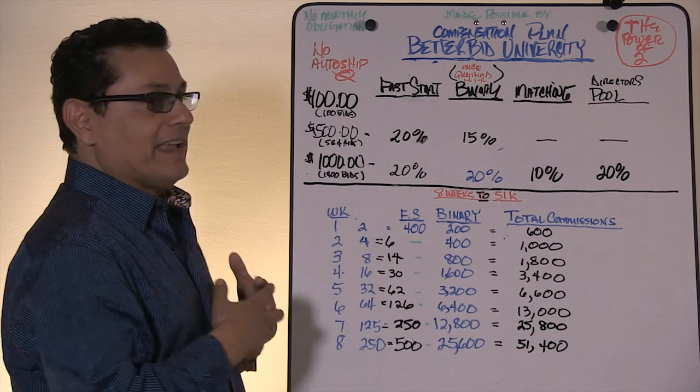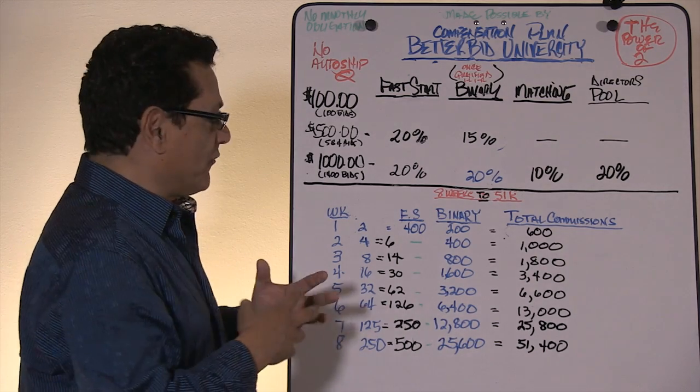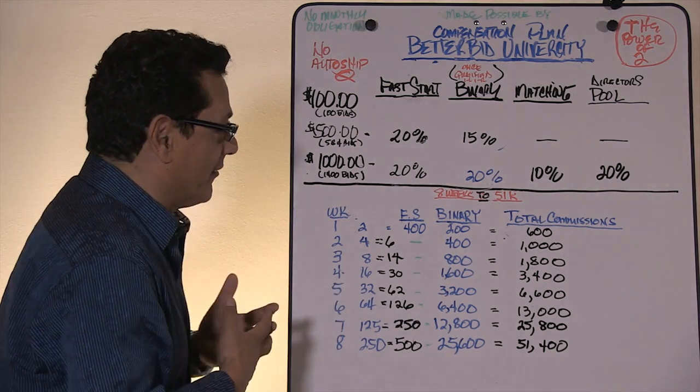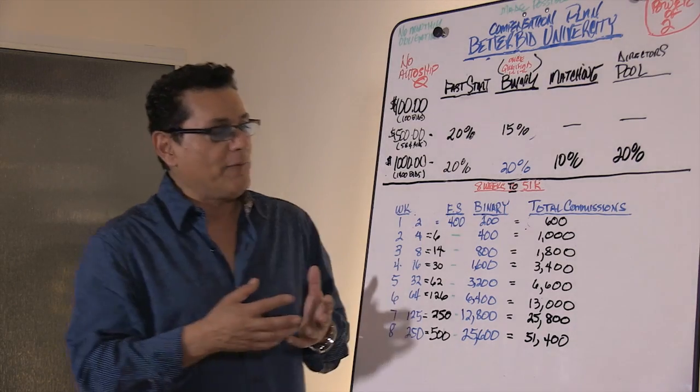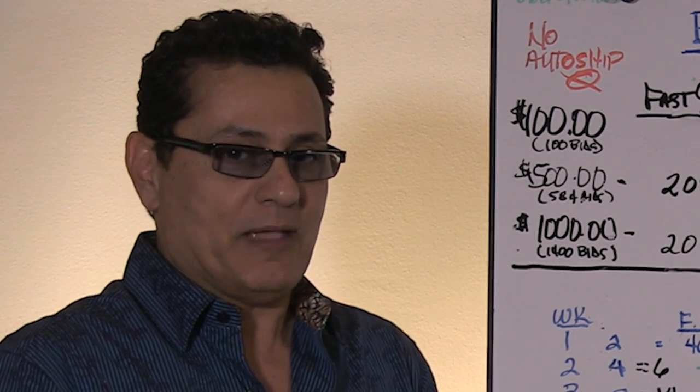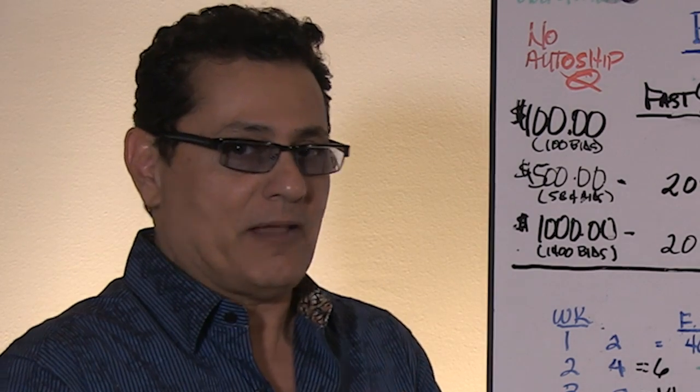If everybody does their job and they get their two, here's how it works. Of course, you can get more and you can get more pay, but this segment, as I said, it's called 8 Weeks to 51K. If you realize just half this goal, you can make a lot of money. So, big money here at BetterBig.